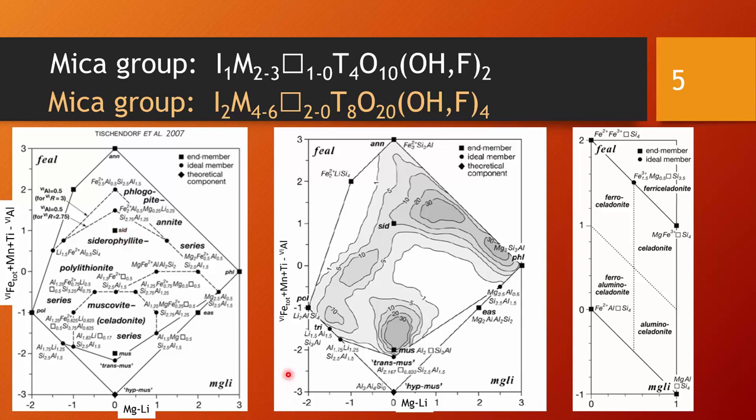Tischendorf et al. have undertaken to plot more than 6,000 mineral analyses of true micas into their diagram. Here in the central diagram we see contour lines that tell us which kind of mica compositions seem to be very commonly reported in the literature and, by extension, might be common in nature. Obviously muscovite is a very prominent member and we see that most muscovite-dominated micas have some component of siderophyllite, so a little bit of iron. That is commonly known that muscovite might have minor iron contents.